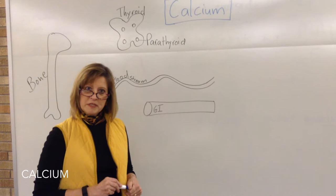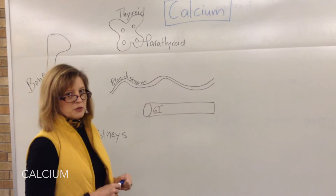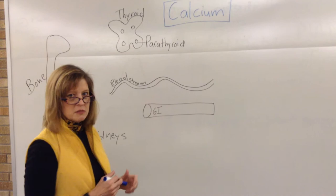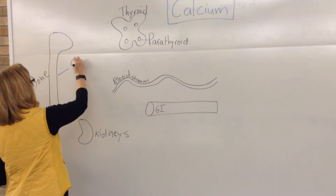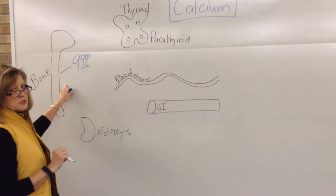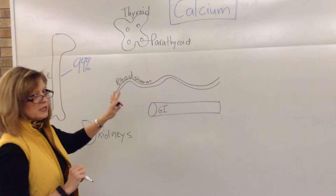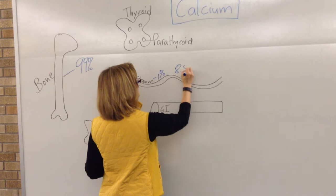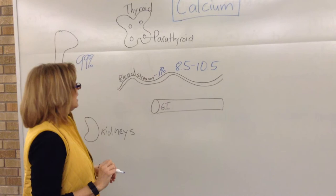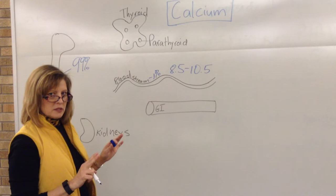Now we're going to talk about calcium. 99% of our calcium is in the bones, making it the largest electrolyte found there. The 1% in the bloodstream has a normal range of 8.5 to 10.5. Calcium is regulated by two hormonal balancing processes to keep it within that range.